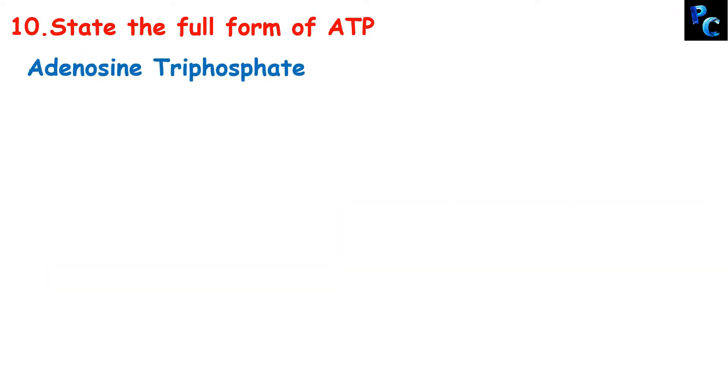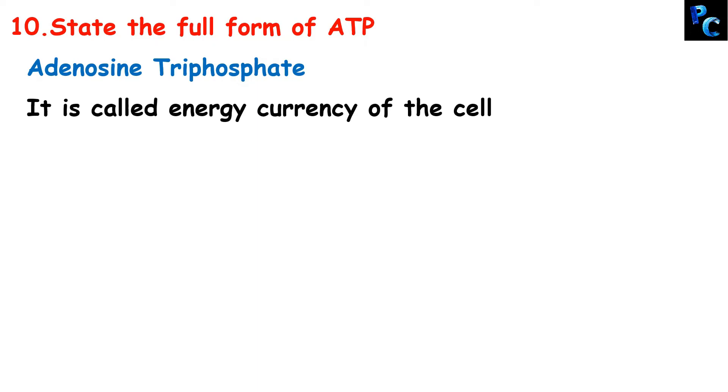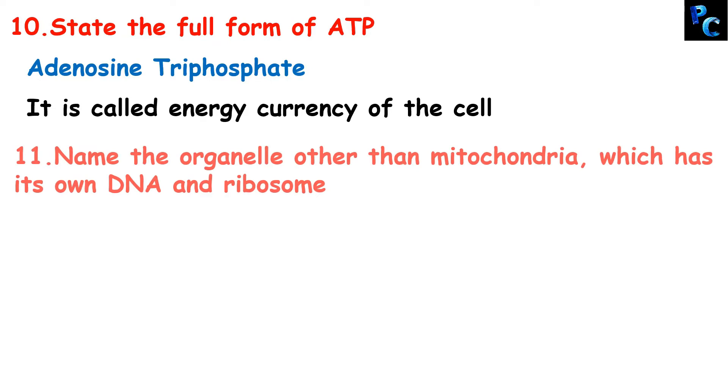State the full form of ATP. ATP is called adenosine triphosphate. It is called the energy currency of the cell because it provides energy to the cell.